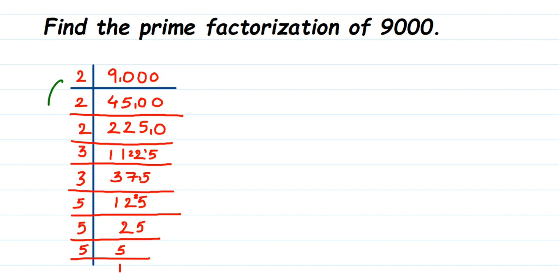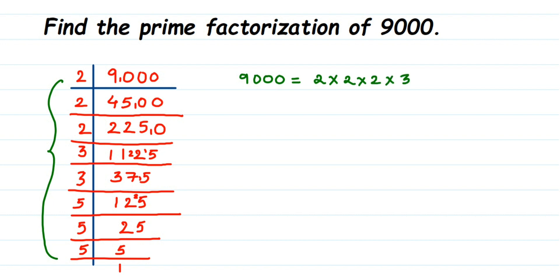When you're dividing, remember you should take only a prime number — that is what they are asking us to find. Once we have done this, we just read out all the factors we have got. So it's 2 × 2 × 2, then 3 × 3, then 5 × 5 × 5. That is the prime factorization — expressing a given number in terms of prime factors. We used the division method here.